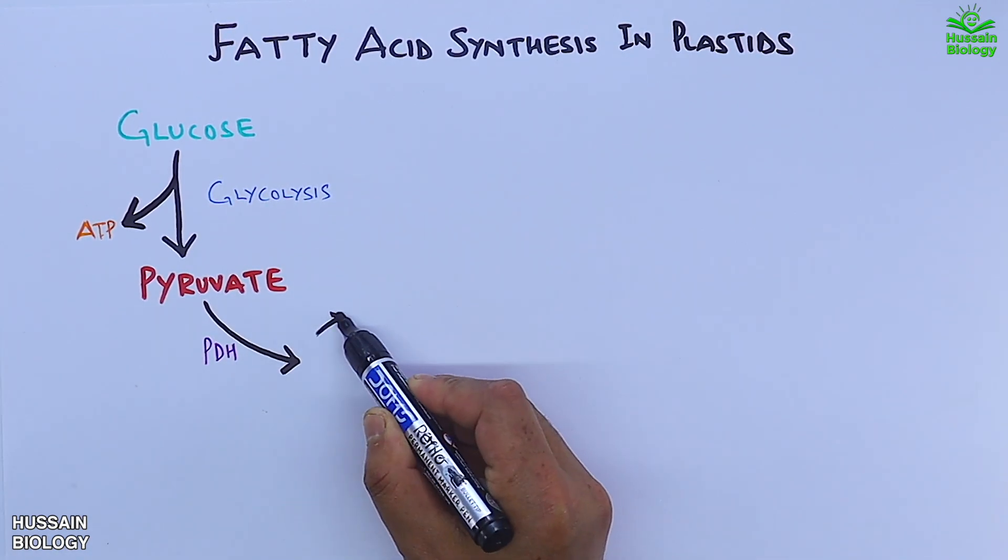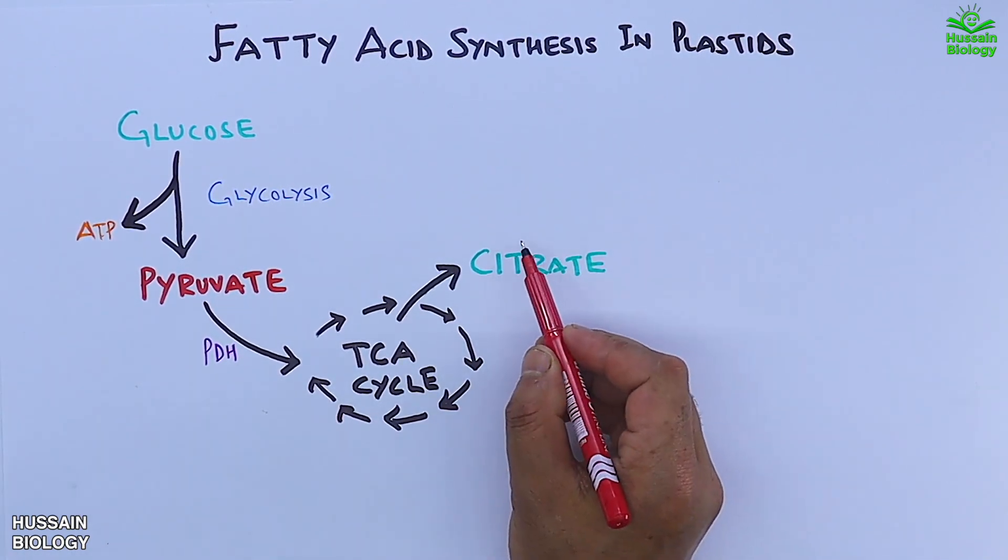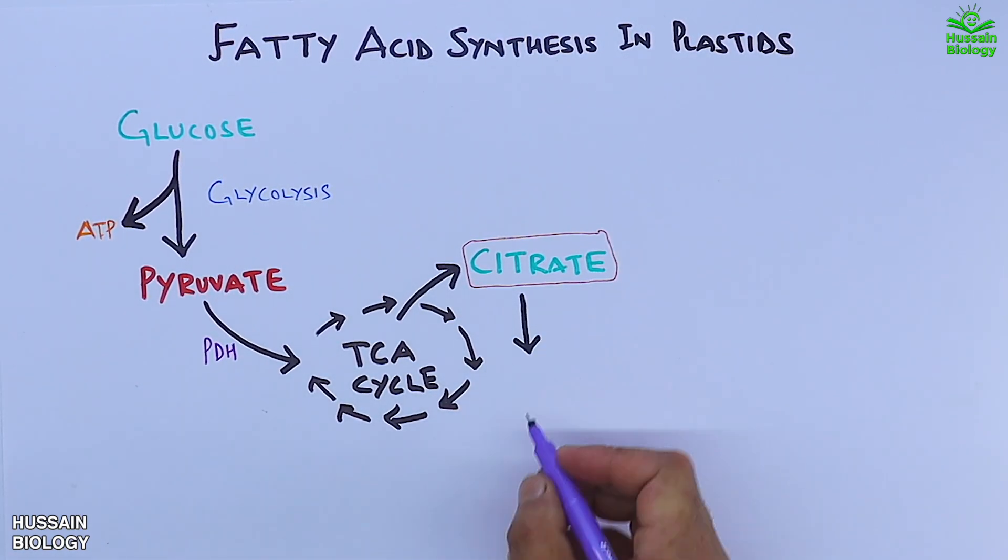Pyruvate then leads into the TCA cycle via the PDH enzyme. In this cycle, we get citrate which is finally converted into oxaloacetate.